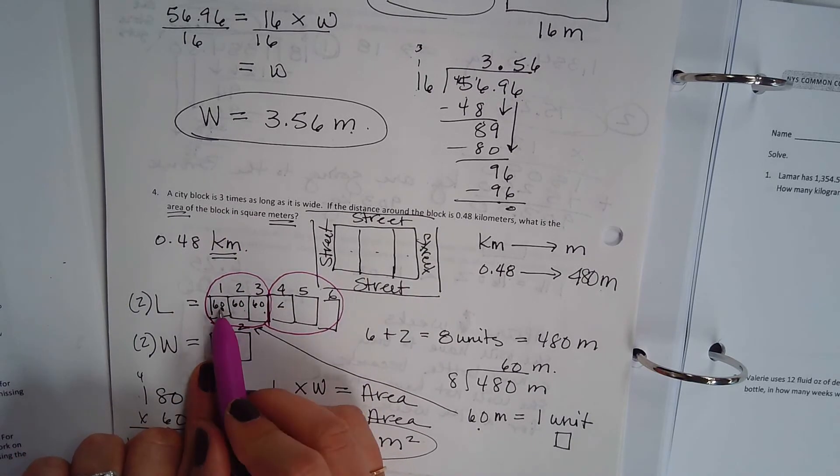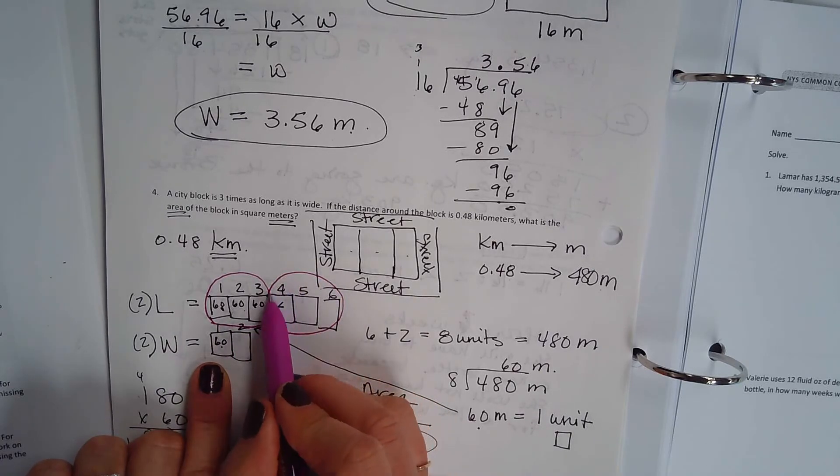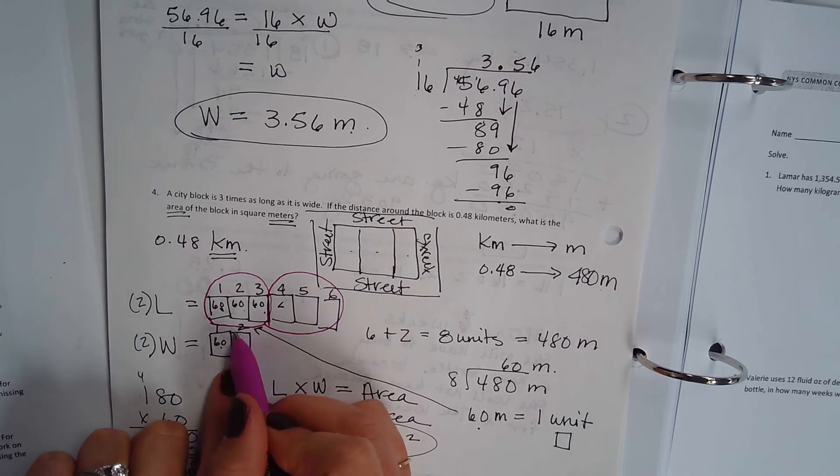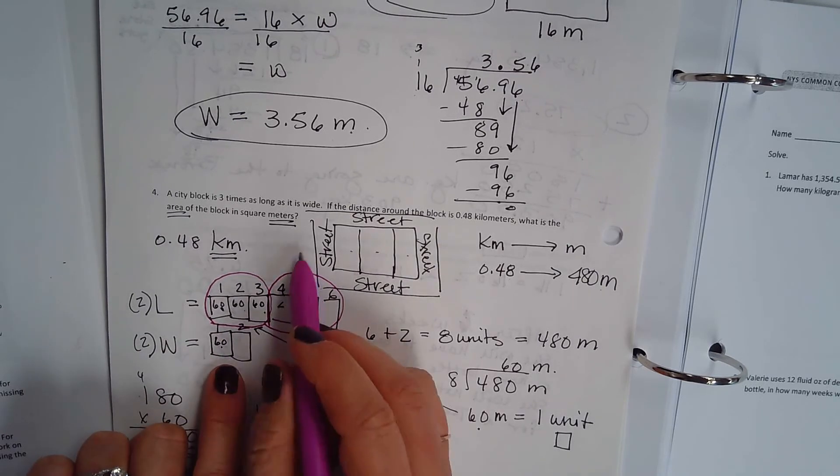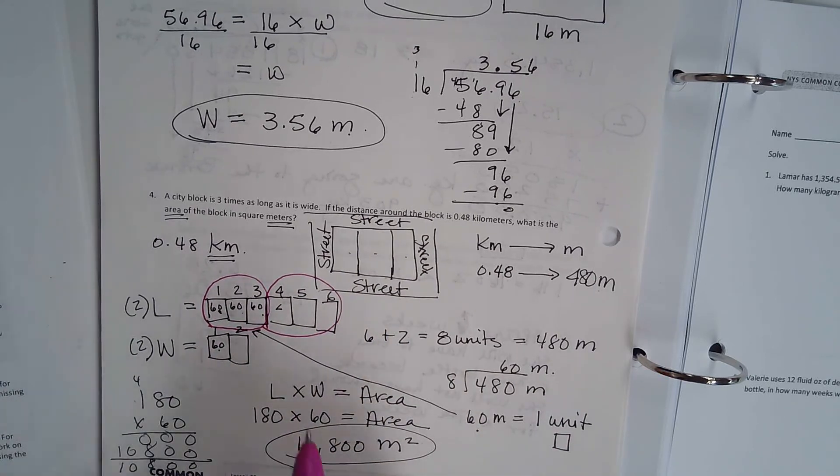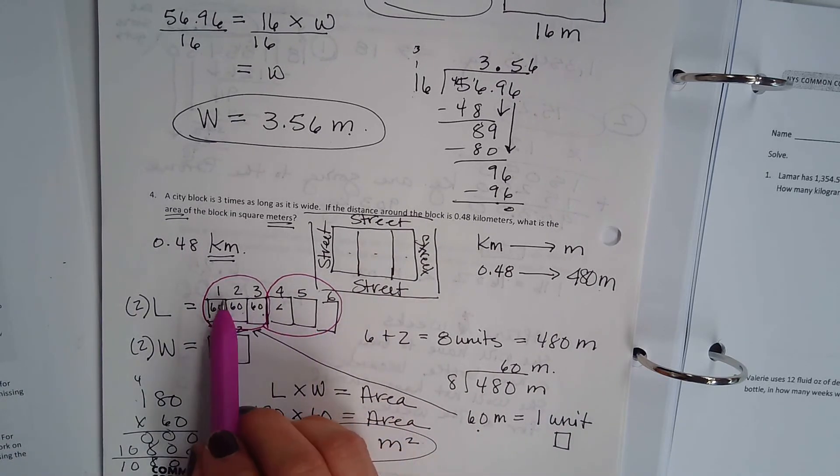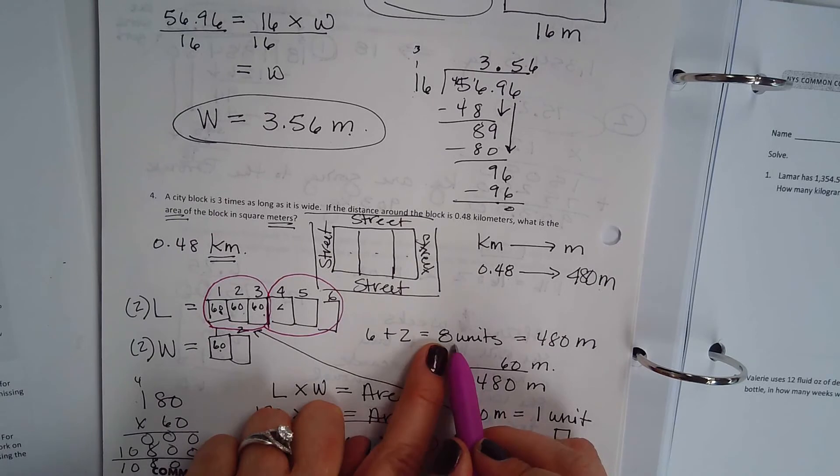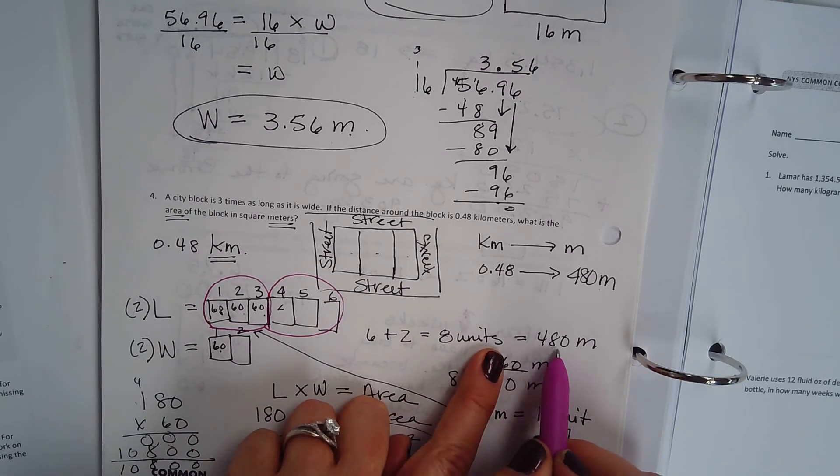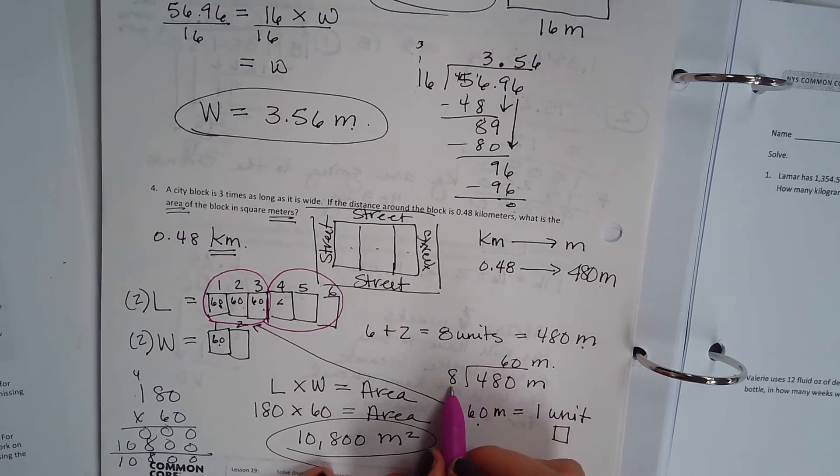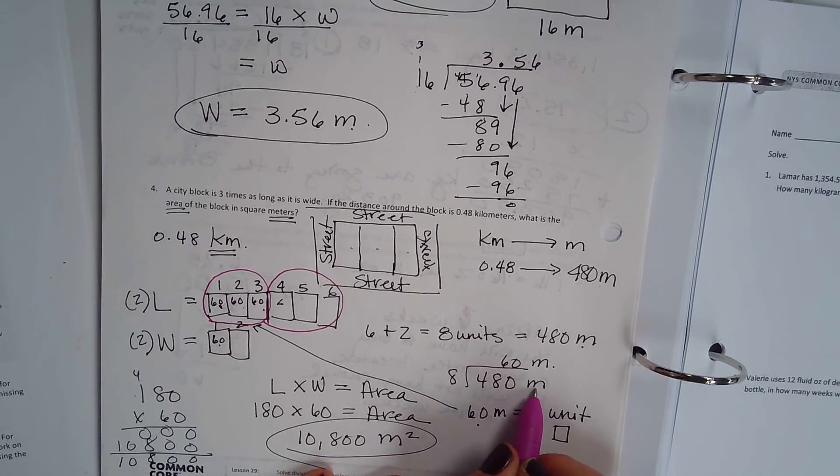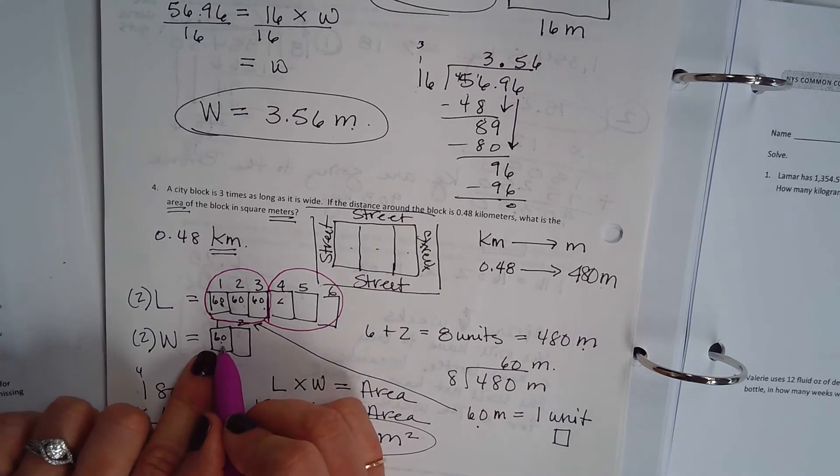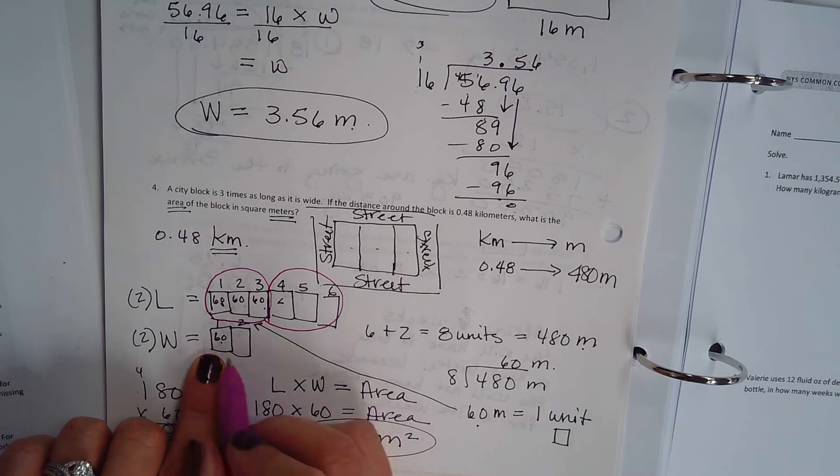So I have my length, one side, two sides broken up into three equal parts. Now I have my width and my width. There are two sides of the rectangle. So what I do is I take up my pieces, one, two, three, four, five, six, seven, eight. So six plus two equals eight units. Eight units is equal to 480 meters. So I'm going to divide eight into 480 meters and get 60 meters. So I now know that one unit is equal to 60 meters.